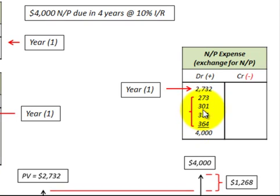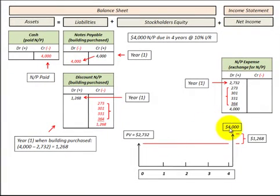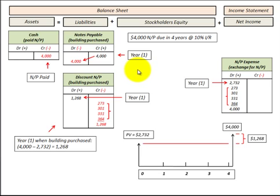In summary, we had a $4,000 payment at the end of the fourth year. We discounted that back to its present value of $2,732, then subtracted those two amounts to come up with the total interest expense on that notes payable. We allocated that interest expense to the expense account, and the balancing entries were to the discount on notes payable. That's how we handle notes payable with a lump sum payment.